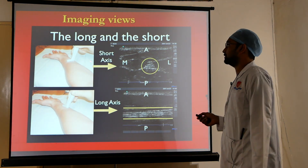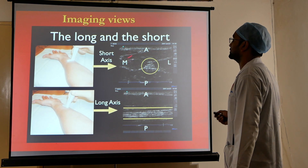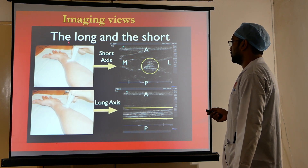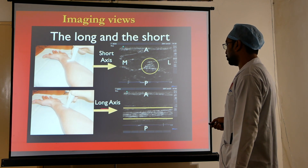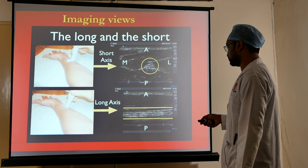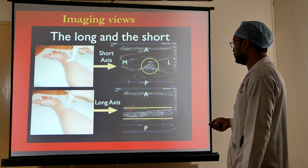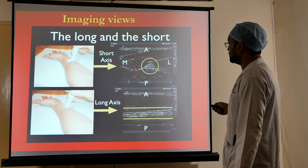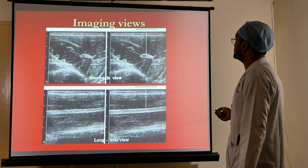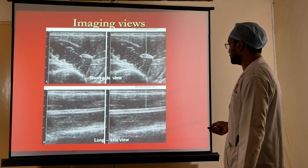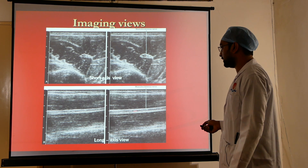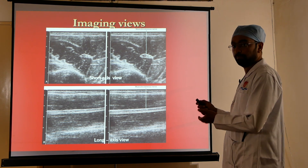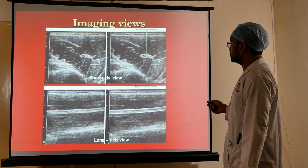The two most common views are the long axis view and the short axis view. If the probe is kept on the skin such that the structure is parallel to the probe orientation, it appears as a long axis view. If the probe is kept perpendicular to the structure, it appears as a short axis view. For example, with the musculocutaneous nerve: keeping the probe parallel gives a long axis view showing it as a long structure; keeping the probe perpendicular gives a circular short axis view.